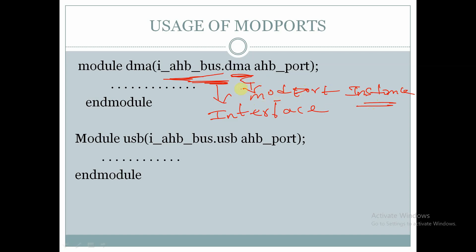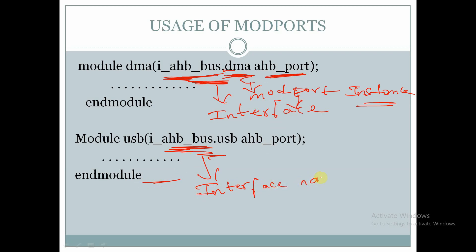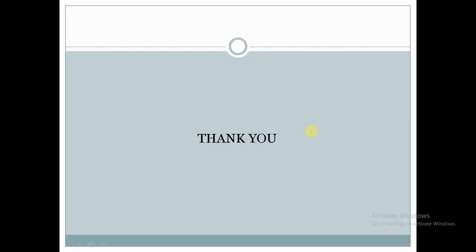For using the modport inside the DMA module, the modport is present in the interface. So we should first declare the interface instance name, followed by dot and the modport name, followed by the instance name — hb_port. Similarly, in USB, we declare i_hb_bus — the interface name — dot modport name. That's all about modport and interface.